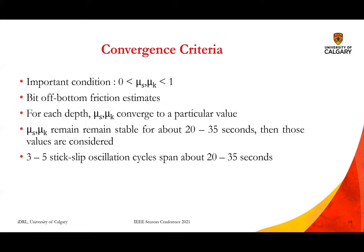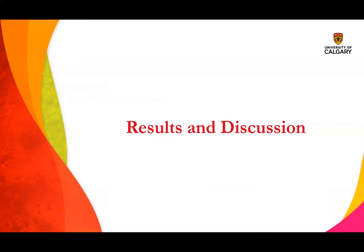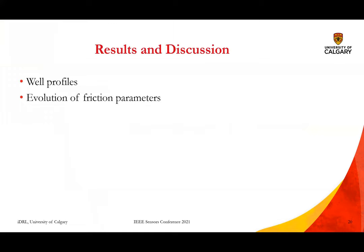The convergence criteria require that both static and kinetic friction coefficients be less than one and greater than zero. These are the bit off-bottom friction estimates. For each step, the static and kinetic friction factors converge to a particular value, and once the value is stable for about 20 to 35 seconds, those values are accepted. The 20 to 35 second window typically contains about three to five stick-slip oscillation cycles. The results focus on well profiles and the evolution of friction factors, followed by estimated downhole parameters.